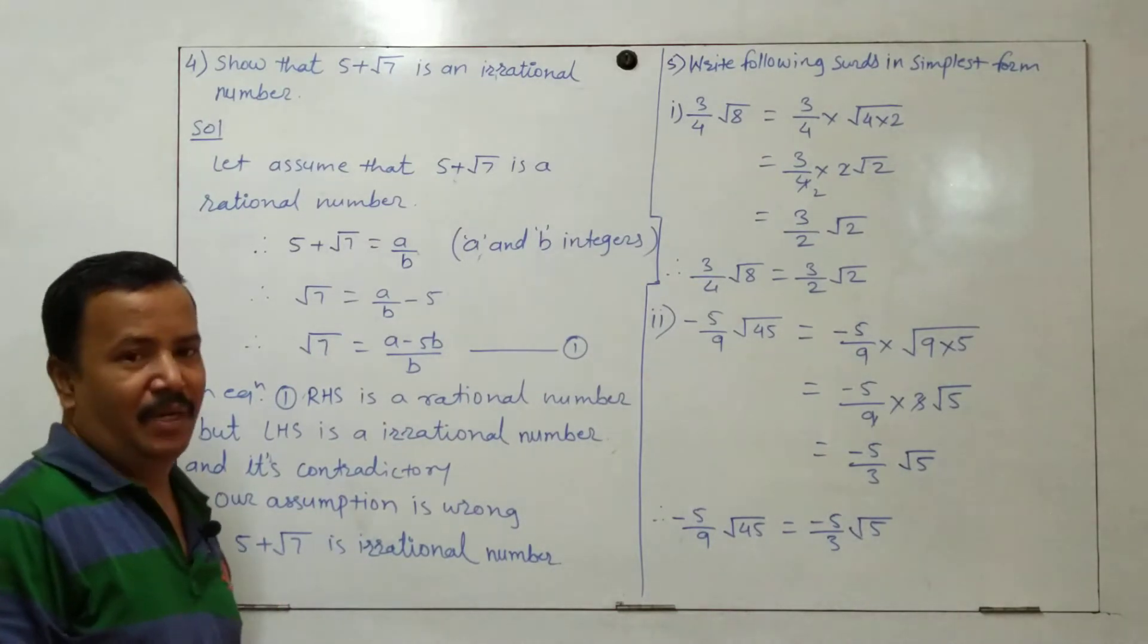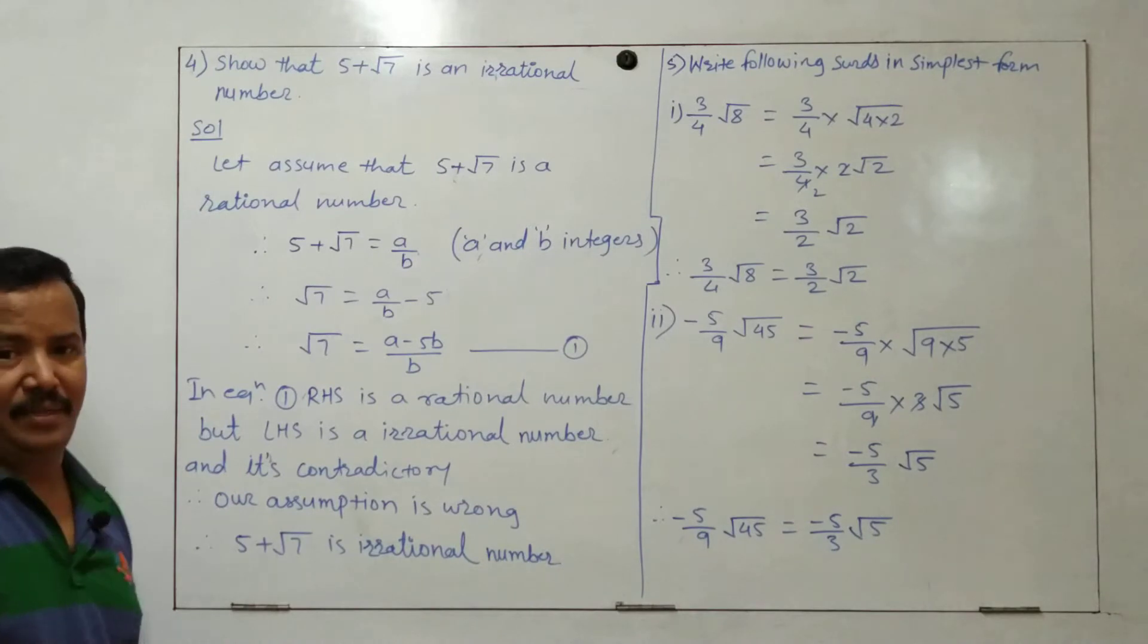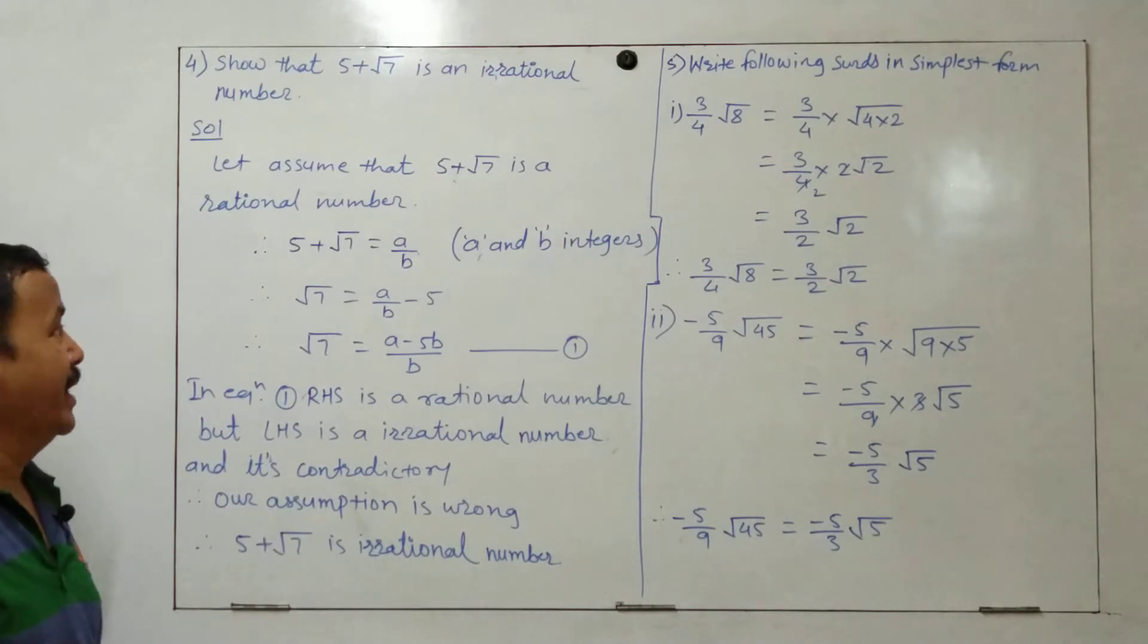Let's assume that 5 plus root 7 is a rational number. If we have to show it's irrational, we assume it's rational. So let's assume it's a rational number. Therefore, 5 plus root 7 is equal to a upon b.